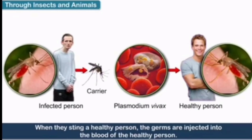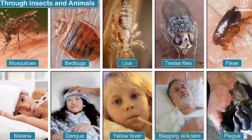Communicable diseases also spread through insects. Some insects carry germs, and the living organisms which carry disease-causing germs are called vectors — mosquitoes are a common example. When these vectors bite a sick person, they suck in blood containing germs. When the same insect bites a healthy person, the germs are transferred to him. Common diseases spread by insect bites include malaria and dengue.